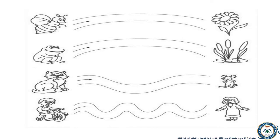Let's look at the picture in front of us. On the left, we will find a bee, a frog, a cat, and a kid. On the right,